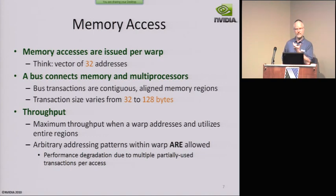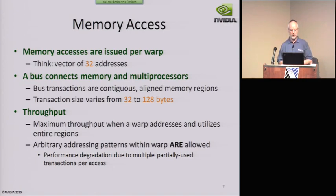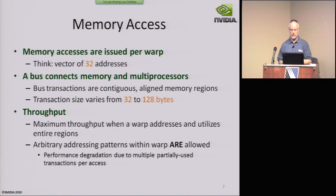For maximum throughput, a warp must address entire contiguous, aligned regions. You can use any arbitrary addressing pattern, but you will be punished with low performance. The hardware handles any pattern, but there may be performance degradation from masking and merging data. If a transaction requests 32 different physical DRAM locations that aren't near each other, the hardware has to read from DRAM 32 separate times — and if those locations are far apart, that will take a very long time.